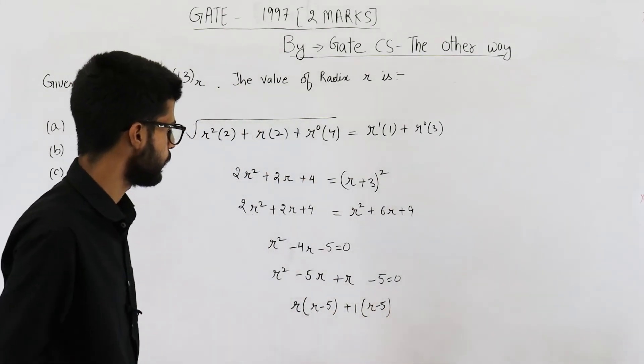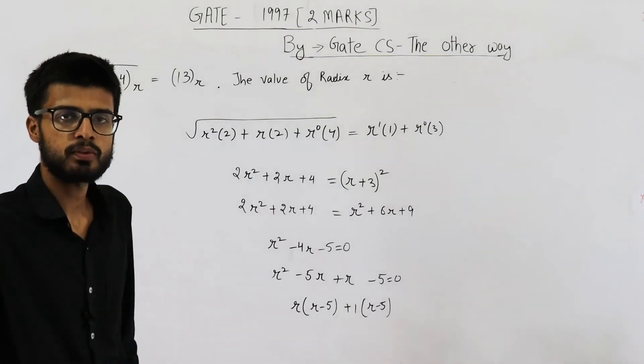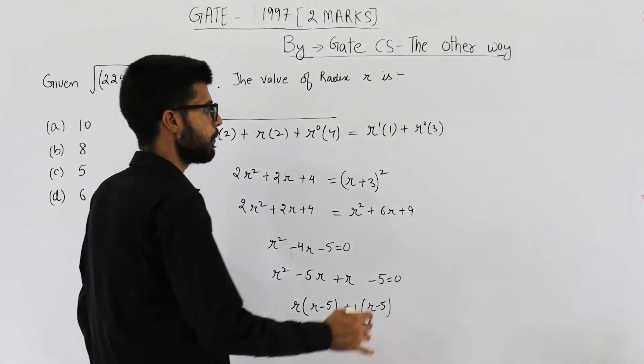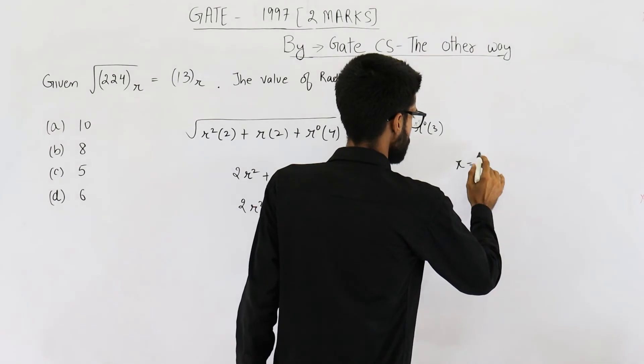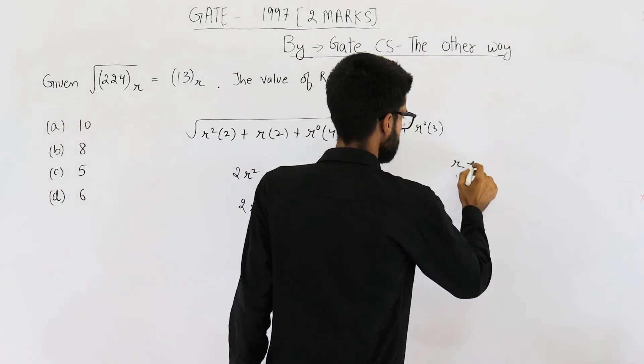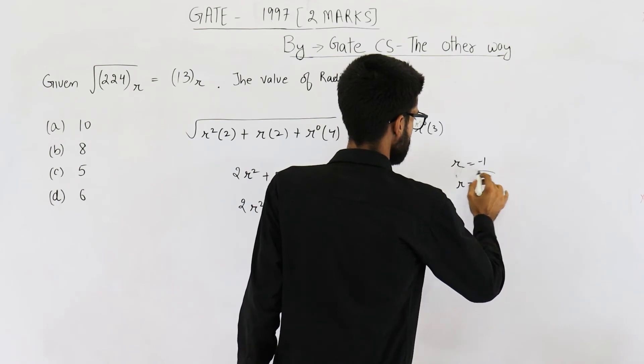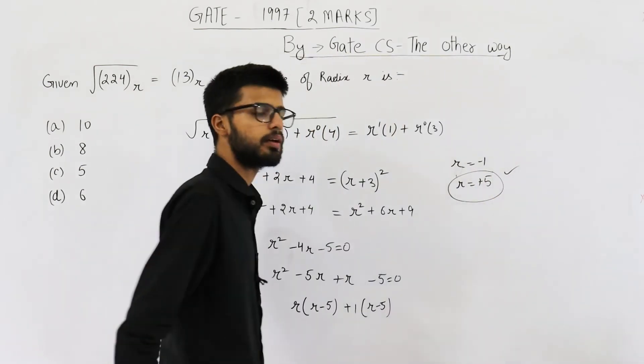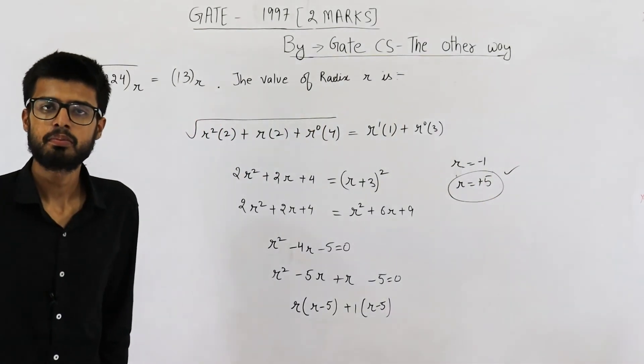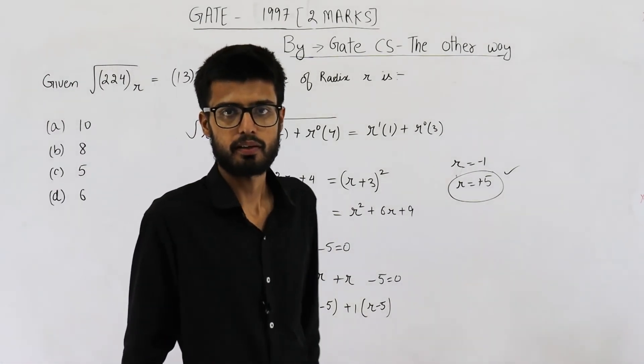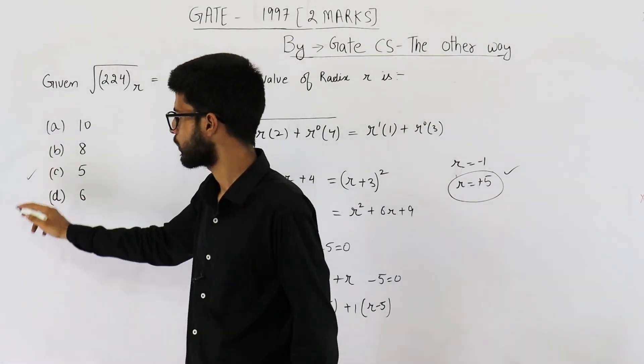From here you can see value of r is minus 1 and plus 5. r is equal to minus 1 and r is equal to plus 5. This one will be selected because base of a number system cannot be 0 or negative. So option c is correct.